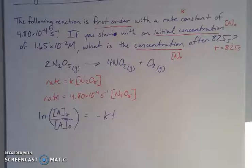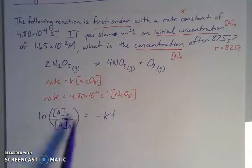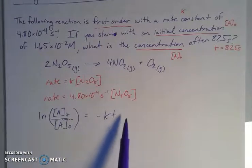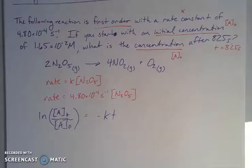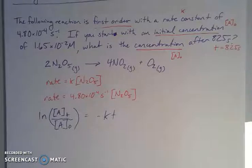Another way to write this expression is to add the natural log of A0 to the other side, so ln[A] at time T equals negative KT plus ln[A0]. We combine it like this because when you're subtracting logarithms, that's the same as taking the ratio.